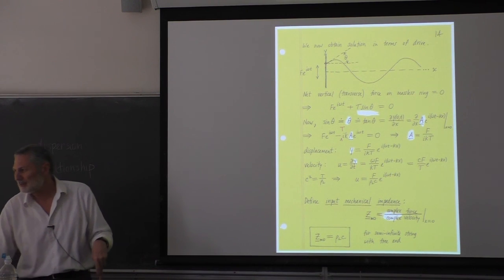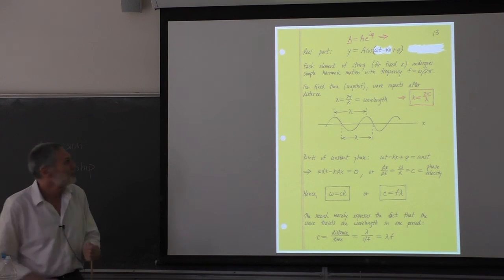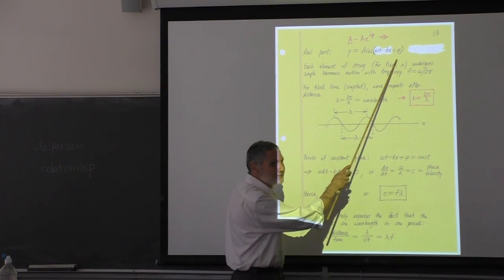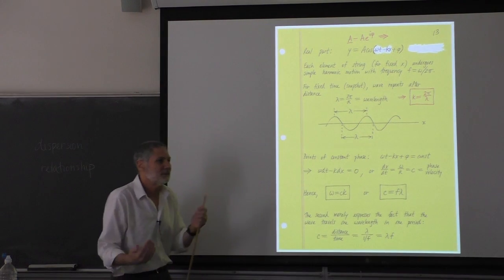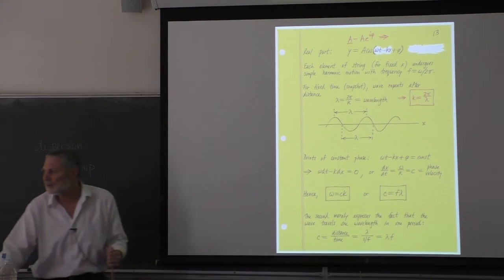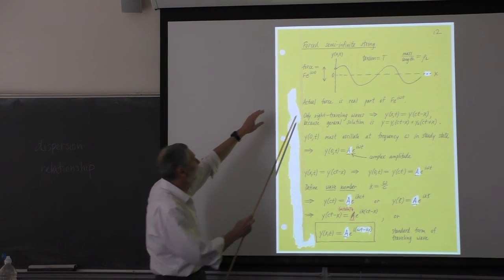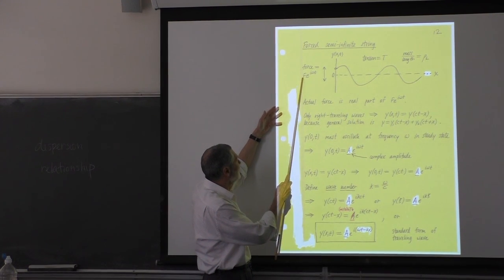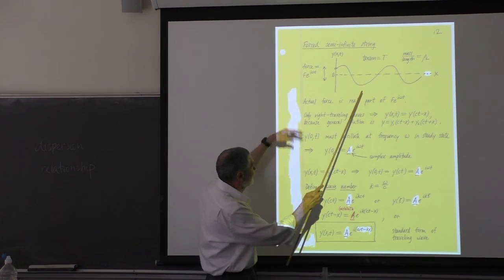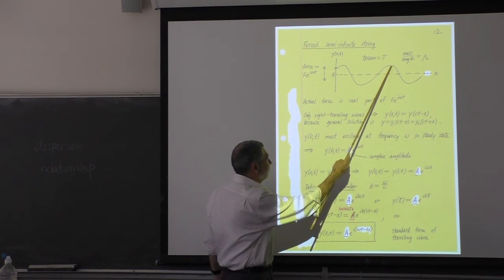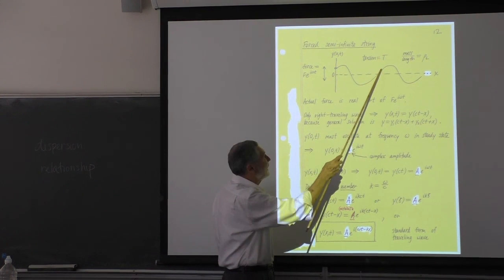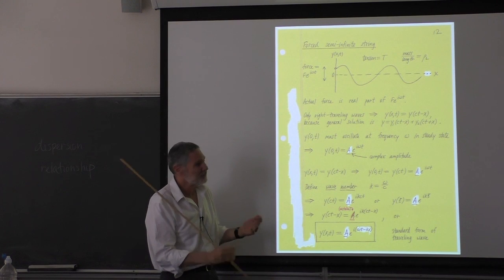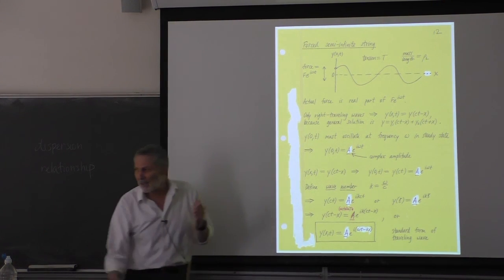Remember, what we're after is A and phi. In the steady state with a prescribed force amplitude and forcing frequency, there has to be a unique response — a unique amplitude and phase relative to the drive. Amplitude and phase are on equal footing.